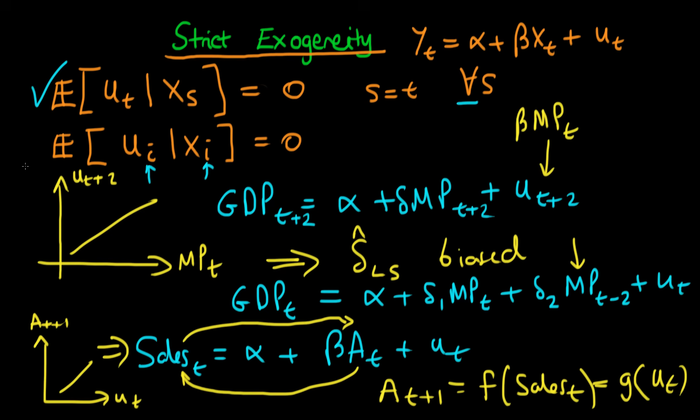Luckily, the large sample properties of least squares in the time series context only depend on us having a weak exogeneity situation. I'm going to talk about that in future videos. This means for large enough samples we can forget about the strict exogeneity assumption because least squares happens to be consistent.